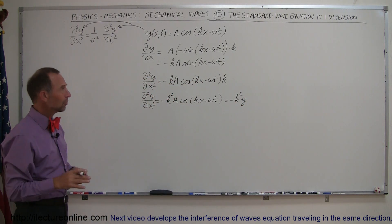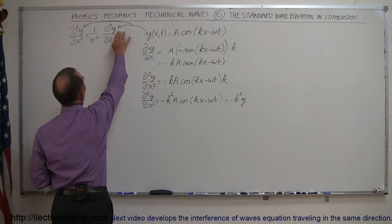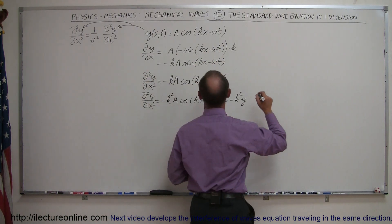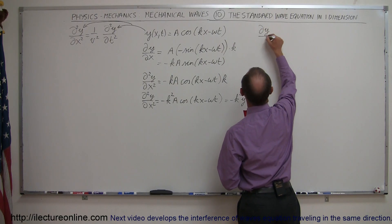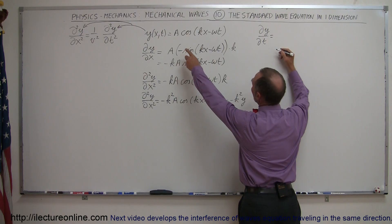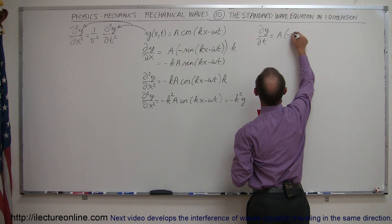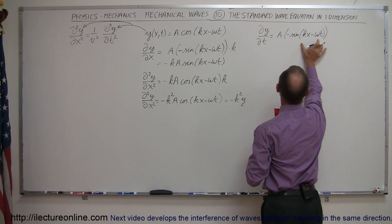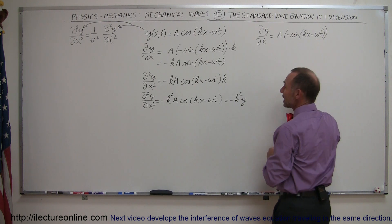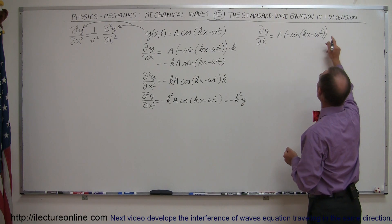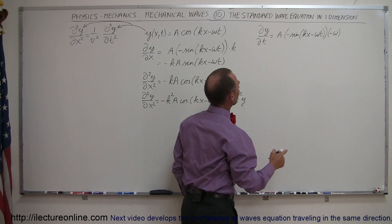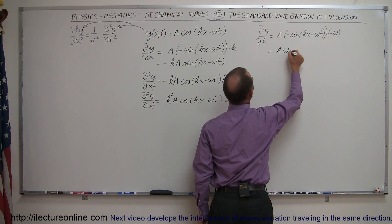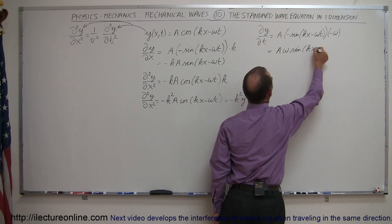Now we're going to do this again. We're going to take the partial derivative of y with respect to the variable t. Now t becomes the variable and x will be a constant. So the partial of y with respect to t equals — again we take the derivative, which is a. The derivative of the cosine is minus sine of kx minus omega t. We take the derivative of the angle and since x is a constant, we multiply by minus omega. So this minus times this minus gives a plus, and this is equal to a times omega times the sine of kx minus omega t.